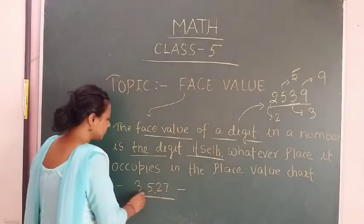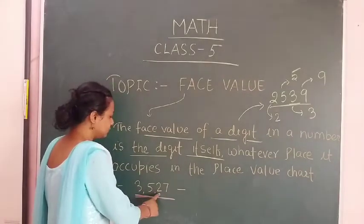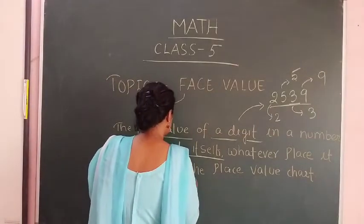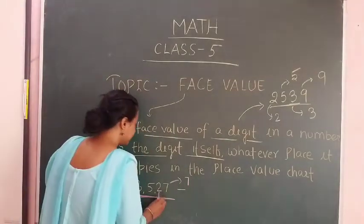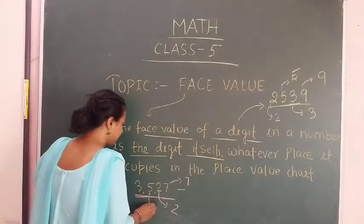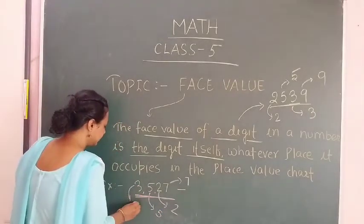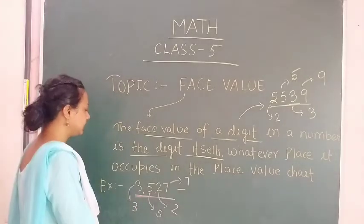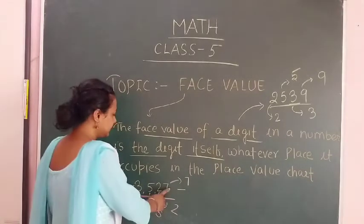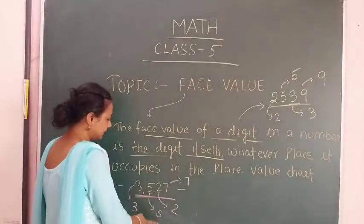The next question: find the face value of different digits in the number 3527. So the face value of 7 is 7, face value of 2 is 2, face value of 5 is 5, and face value of 3 is 3.